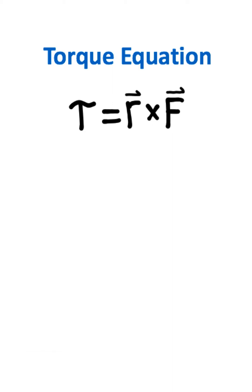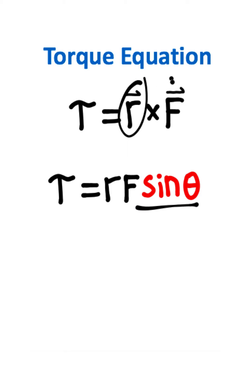Now a common way this equation is written is the magnitude of displacement times the magnitude of force multiplied by the sine of the angle between the displacement and force vectors.